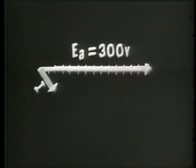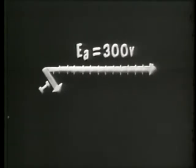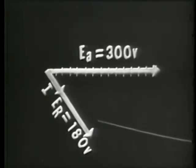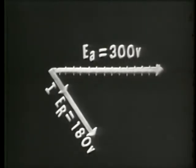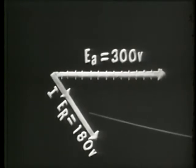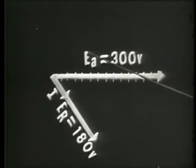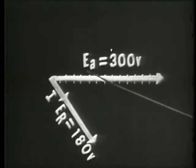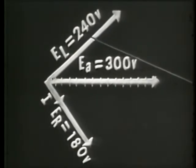The voltage drop across any resistor is in phase with the current flowing through that resistance. Therefore, ER — 180 volts in amplitude — is plotted in phase with the current. We also know that the current through any inductor lags the voltage by 90 degrees, or equivalently the voltage leads the current by 90 degrees. So the voltage across the inductor must be 90 degrees in a leading or positive direction from the voltage across the resistor. Therefore, EL is plotted at approximately 37 degrees, and from Ohm's Law, EL equals 240 volts.